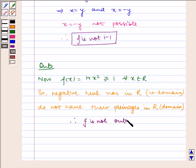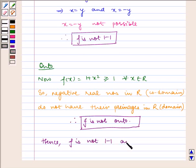Therefore, f is not onto. Hence, we can see that f is not onto and f is not one-one. Therefore, f is not bijective. I hope you understood this problem. Bye and have a nice day.